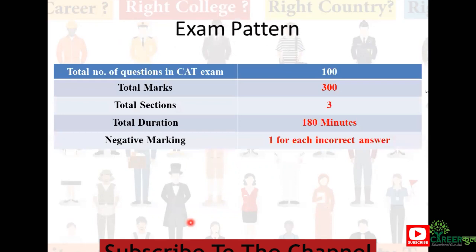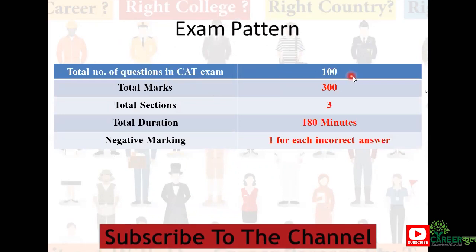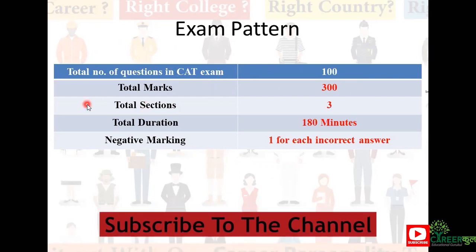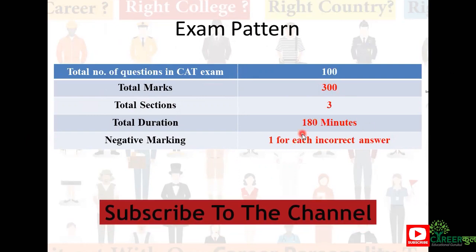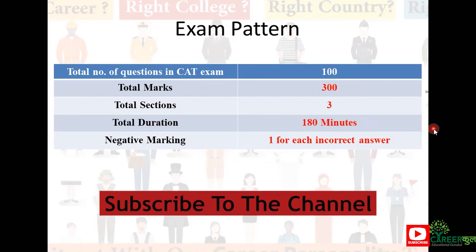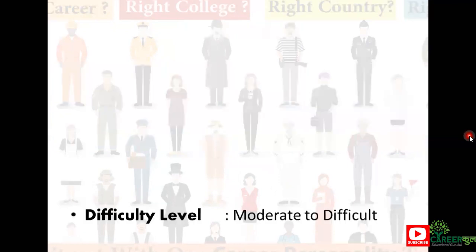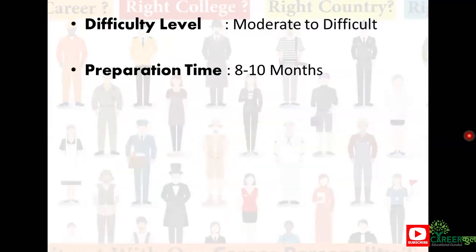About the exam pattern: the total number of questions is 100, and the total marks allotted are 300. There are three sections — quantitative ability, LRDI, and verbal ability and reading comprehension. The duration of the exam is 180 minutes, and negative marking is minus one for each incorrect answer. The difficulty level is moderate to difficult.